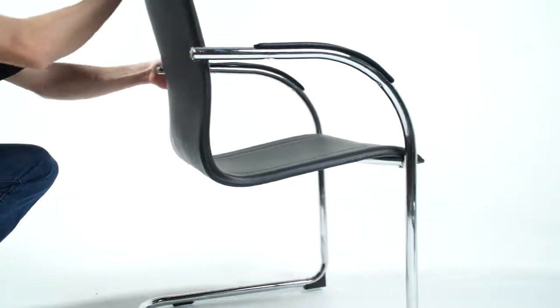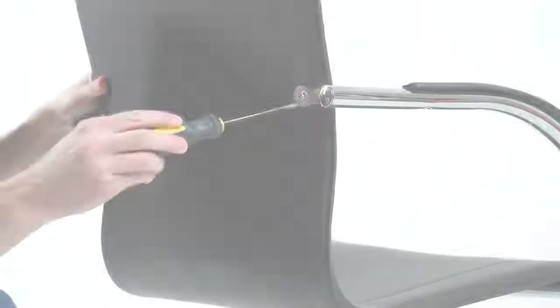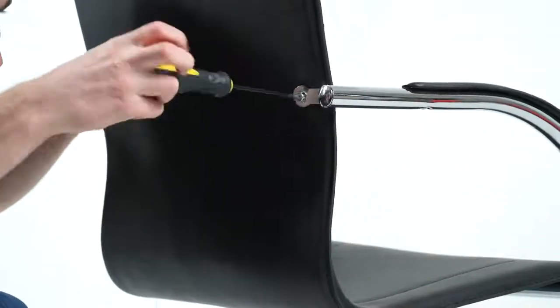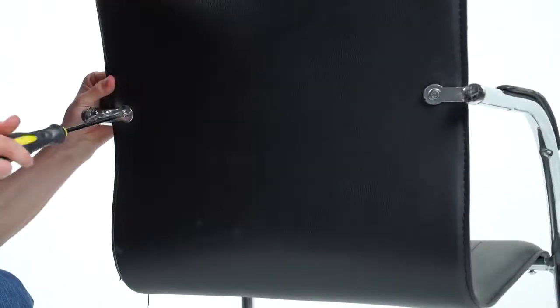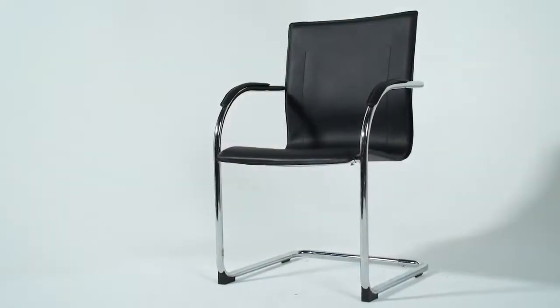Next, you'll attach the backrest to the frame. Align the screw holes on the frame with the screw holes on the backrest. Fasten the backrest with the included screws. You're now ready to enjoy your new chair.